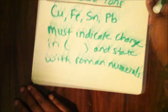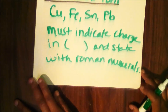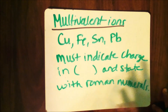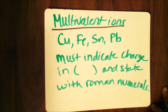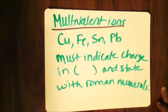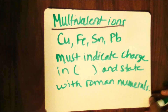Now let's take a look at the next type of formula — multivalent ions. This is still under the category of ionic compounds: metal plus nonmetal elements. Multivalent means they have multiple charges. Copper, iron, tin, and lead are just four examples of elements with multiple charges. You must indicate the charge in parentheses and state the formula with Roman numerals.